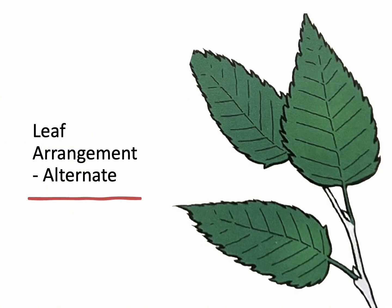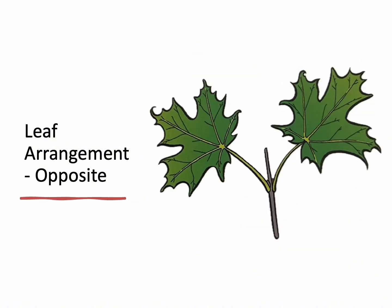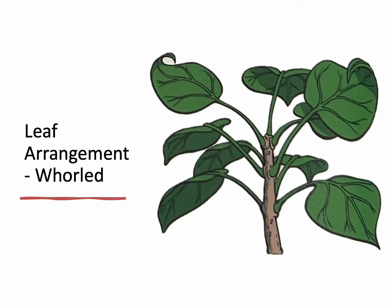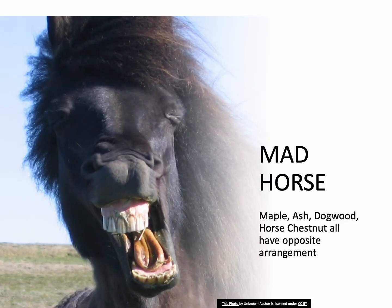Let's talk about how the leaf is arranged on the stem — also an identification cue. Alternate means buds are staggered along the stem. Opposite means two leaves come off one bud on opposite sides of each other. And then whorled — three leaves — is less common. Trees with opposite arrangement fall into the category MAD HORSE: Maple, Ash, Dogwood, and Horse chestnut. They all have opposite arrangement, which really narrows it down. If you're in the woods and you see a tree with opposite arrangement, it's going to be one of these.